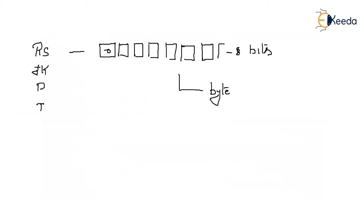Collecting 8 flip-flops together provides you with a byte — this is the smallest measurement. The smallest measurement is not a bit, but a byte. Now, we need to talk about CPU architecture.